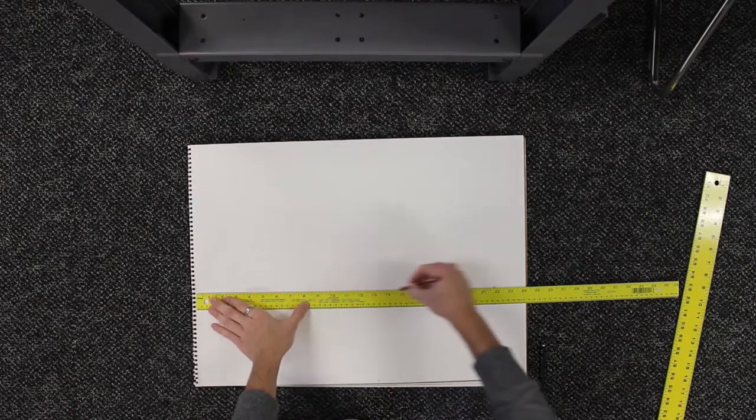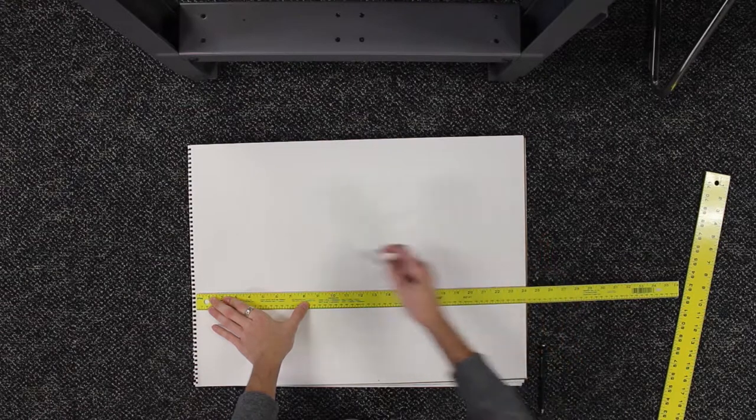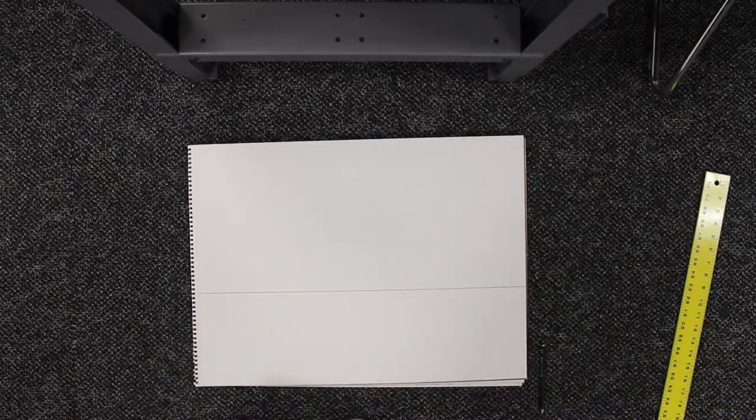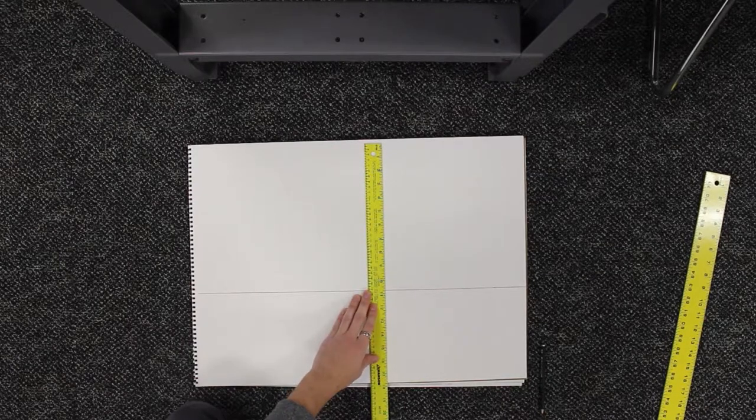As always, the first thing you do is create a horizon line to start with, and that's just a compositional decision. This time I have a building that's largely above me, so it's going to go in the bottom third.